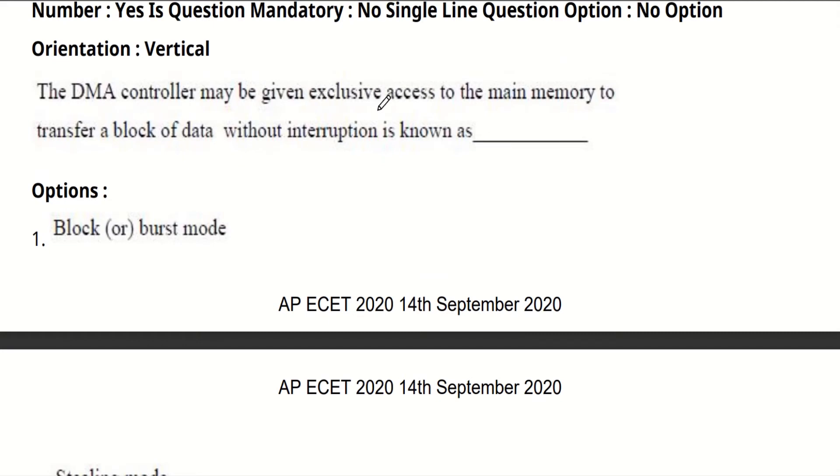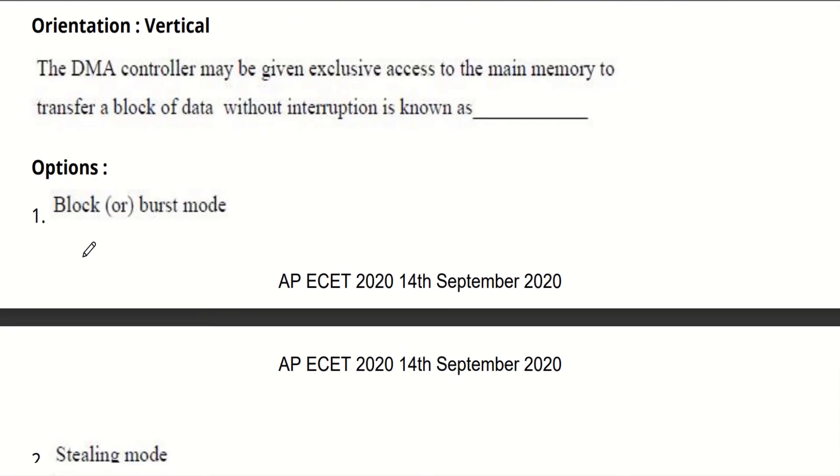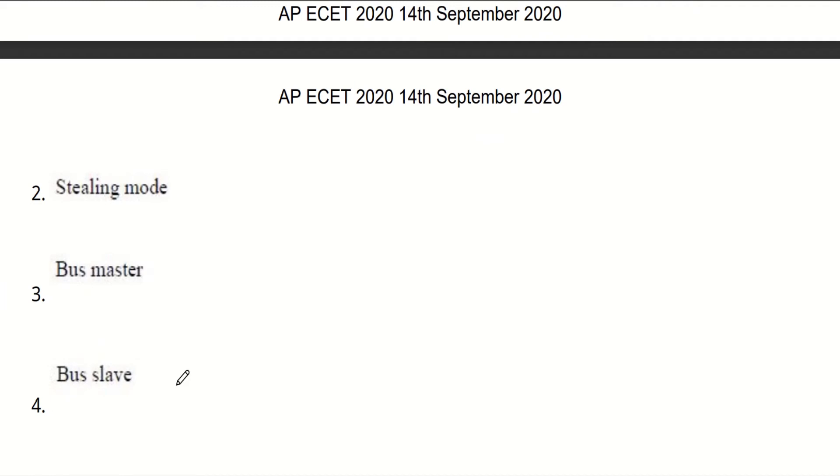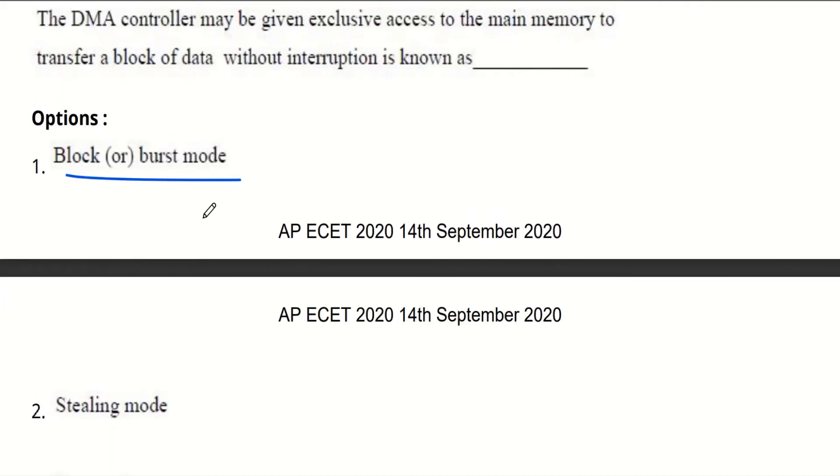The DMA controller may be given exclusive access to the main memory to transfer a block of data without interruption is known as. We will see the options: Block or bus mode, Stealing mode, Bus master, Bus slave. The answer is block bus mode. Block bus mode means a device using transferring of data repeatedly. In this mode the data is transferred repeatedly without going through the steps required, and it is repeating always. Now let's move to our next question.